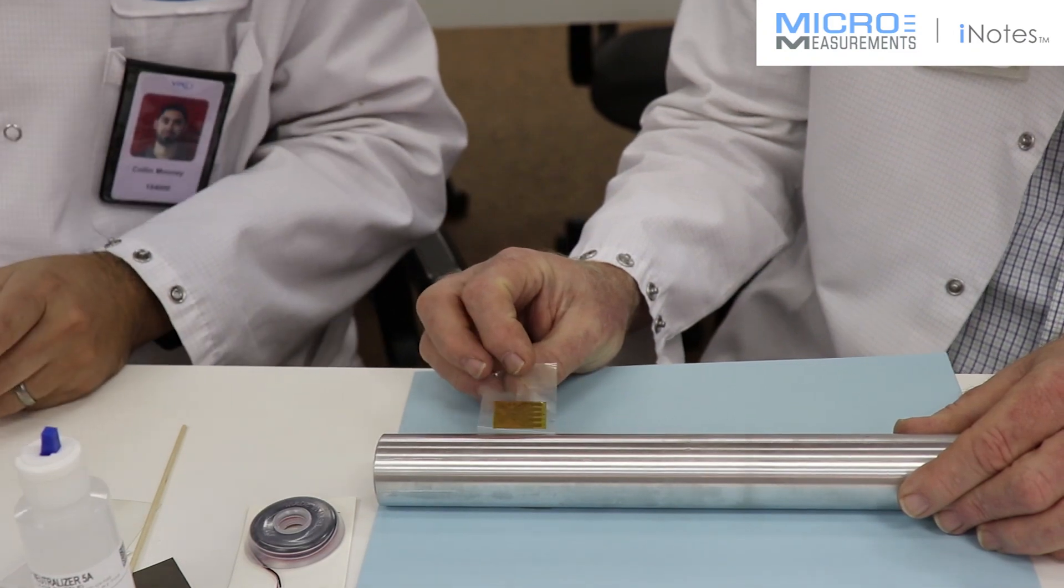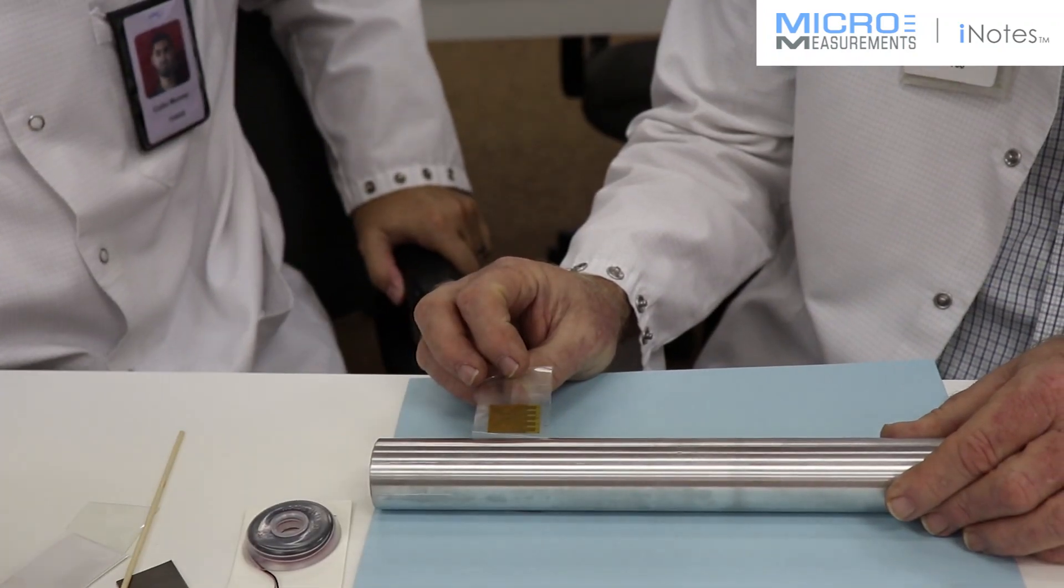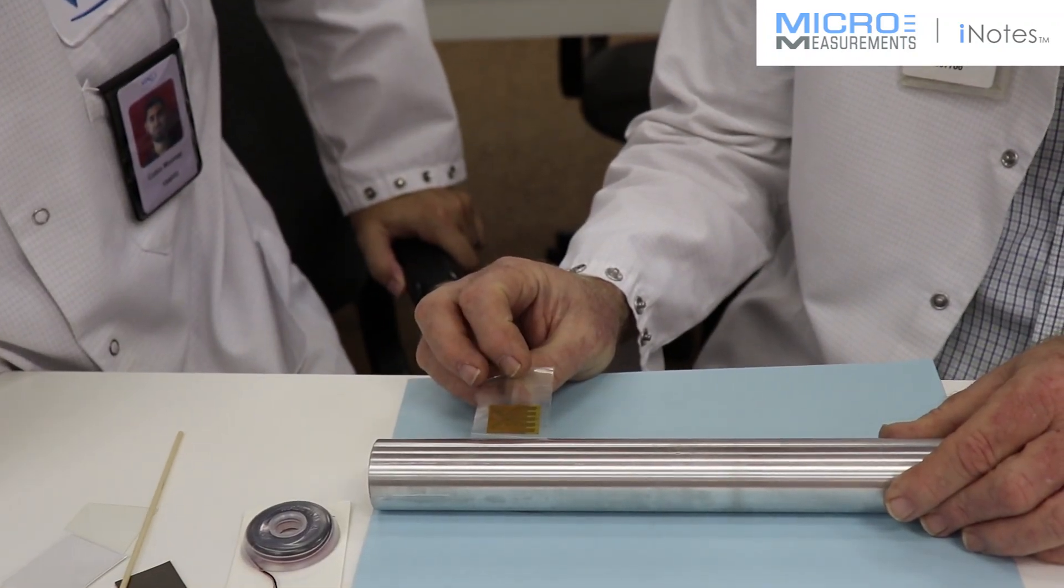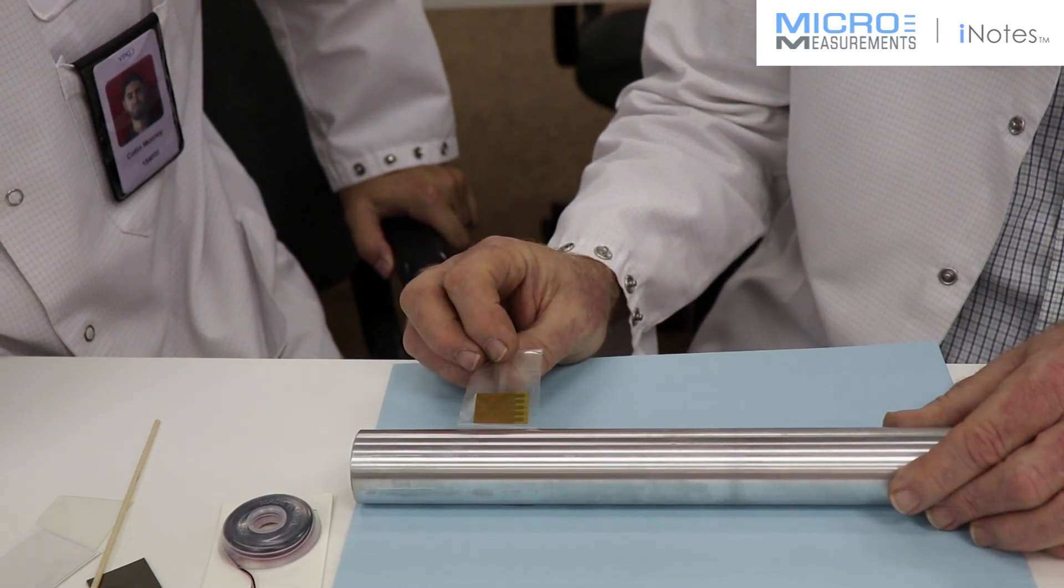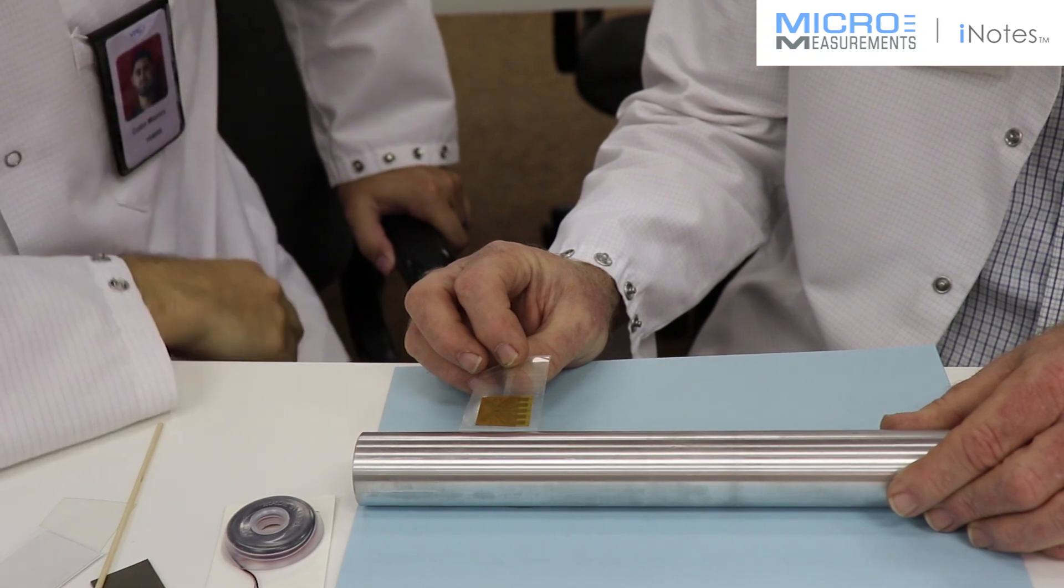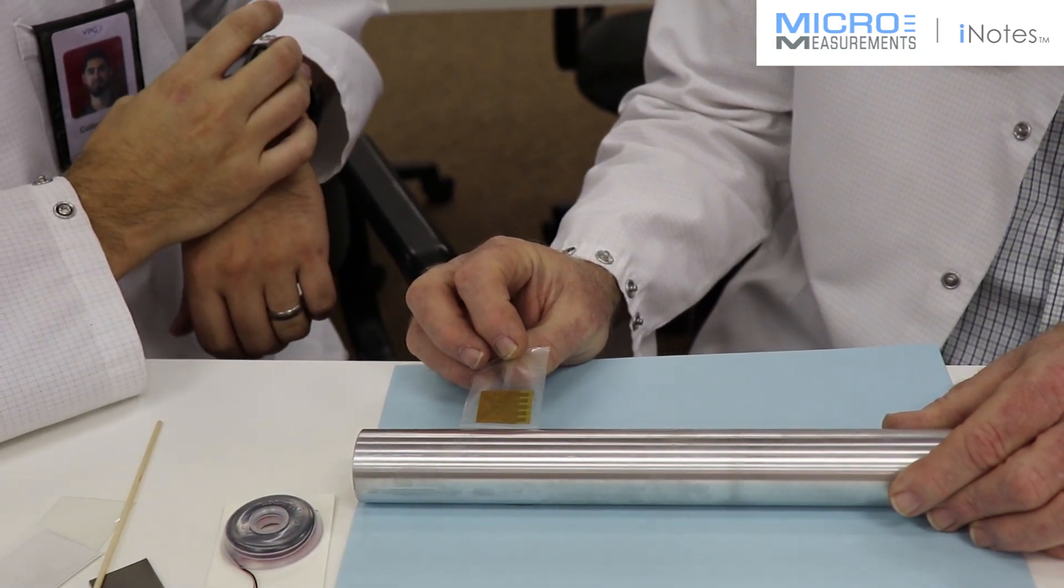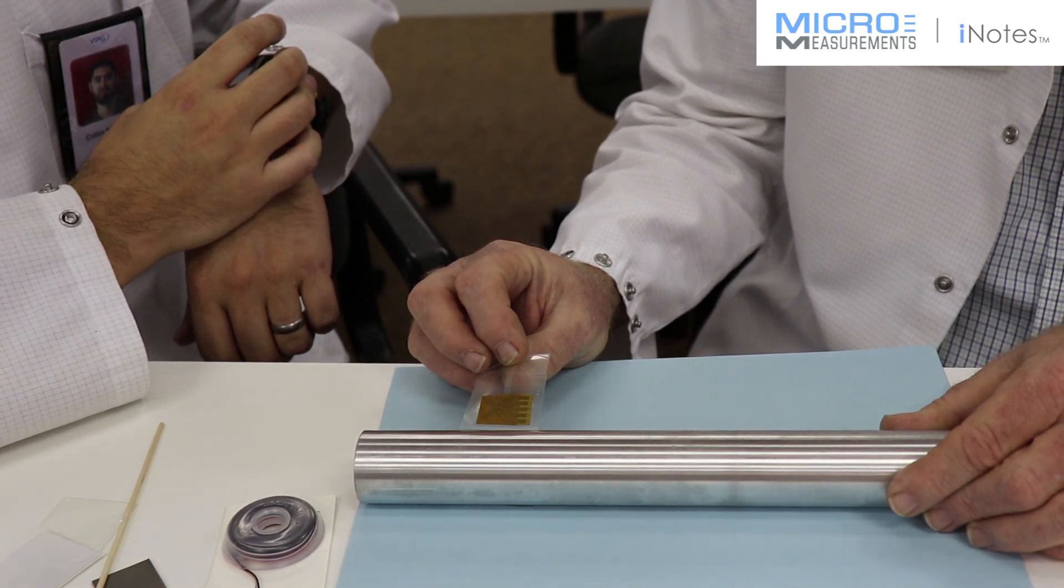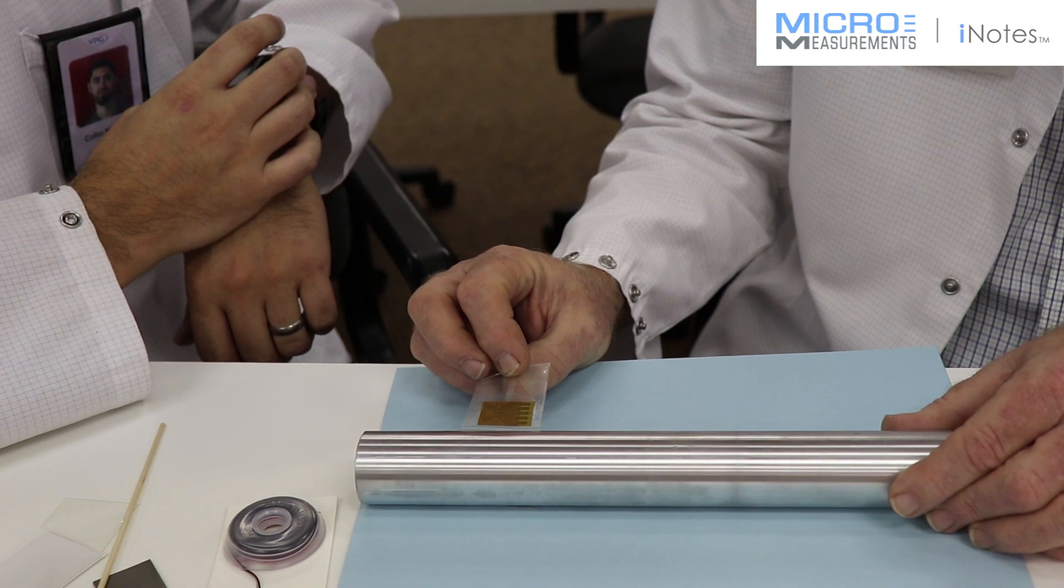We allow that to air dry for one full minute. Now this particular gauge, the 250US, once it's properly bonded in place, will give us twice the shear strain on this aluminum tube, or four times the uniaxial strain. If you know the modulus of your tube and the thickness of the wall, you can calculate the strain or the shear strain that would be applied on this and calculate back to a known torque or load.